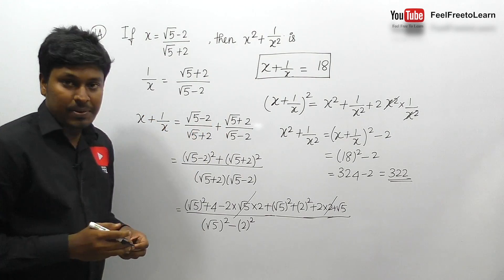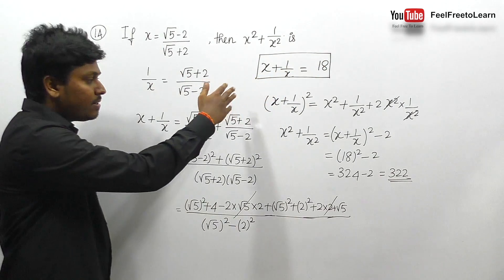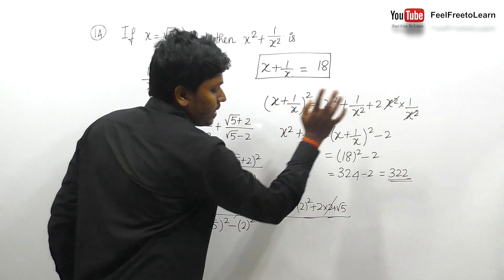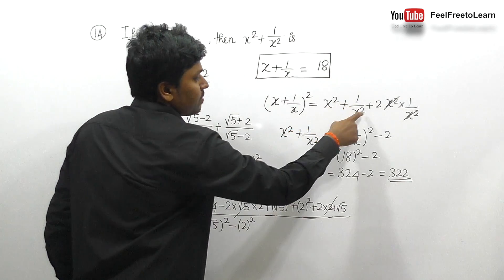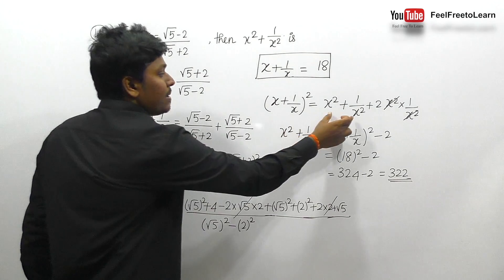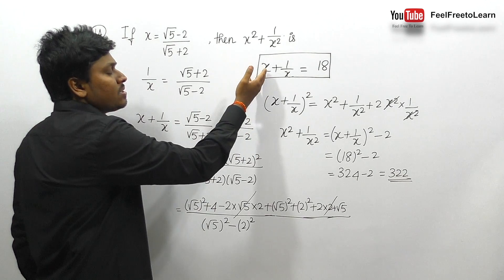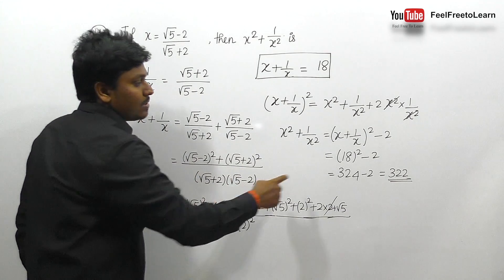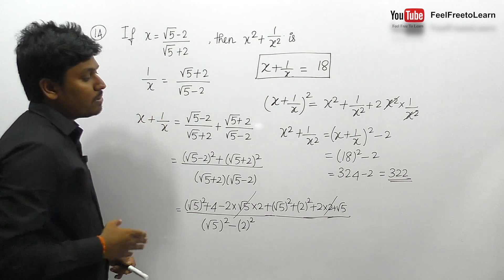Always remember: we found x + 1/x = 18 using rationalization. Then using the formula (a+b)² = a²+b²+2ab, we get (x+1/x)² = x²+1/x²+2. Rearranging: x²+1/x² = (x+1/x)² - 2 = 18² - 2 = 324 - 2 = 322.